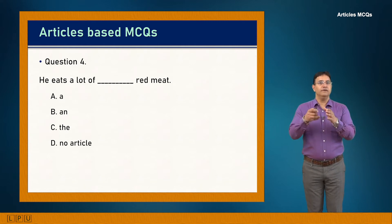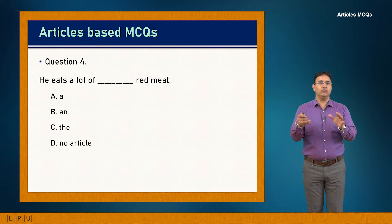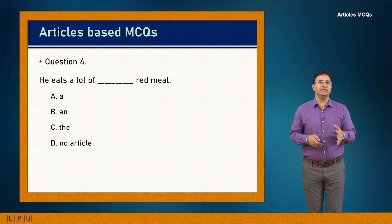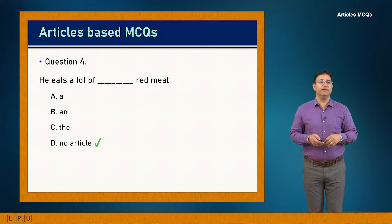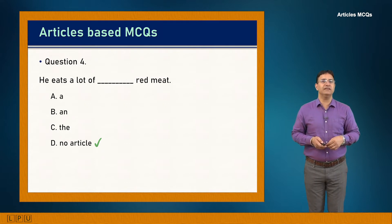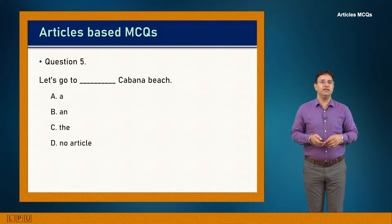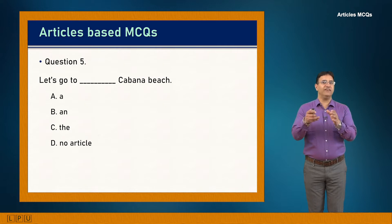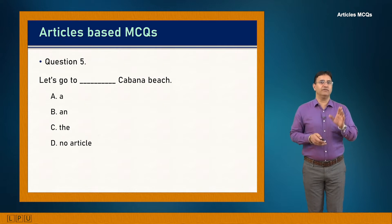Question 4: He eats a lot of dash red meat. No article is needed here — 'He eats a lot of red meat' is perfectly fine. Question 5: Let's go to dash Cabana Beach. 'The Cabana Beach' indicates a specific place, but 'Cabana Beach' with no article is also acceptable. Both C and D are possible answers.